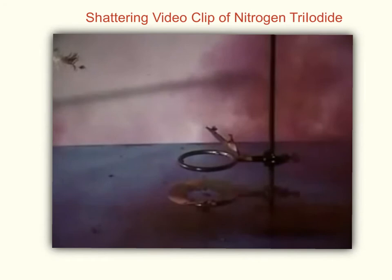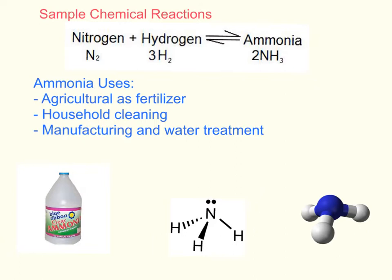Here is another chemical reaction involving nitrogen. In this reaction, nitrogen reacts with hydrogen to form ammonia, and this shows a completely balanced chemical equation for this reaction. This is a synthesis type of reaction since two reactants combine to form just one product — ammonia, which is NH₃.